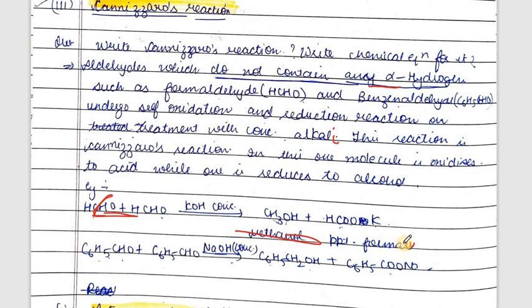Similarly, benzaldehyde also does not have alpha hydrogen. So one molecule forms the salt of the acid and the second forms benzyl alcohol. In the Cannizzaro reaction, aldehydes and ketones without alpha hydrogen undergo condensation in the presence of concentrated alkali to undergo self oxidation and self reduction. For formaldehyde, methanol and potassium formate are formed; for benzaldehyde, benzyl alcohol and sodium benzoate are formed.